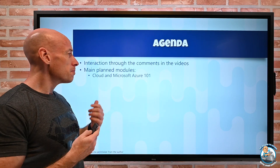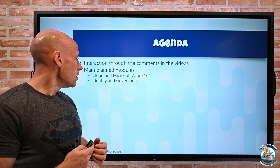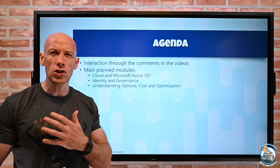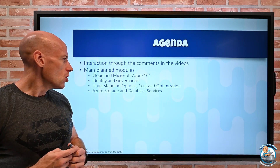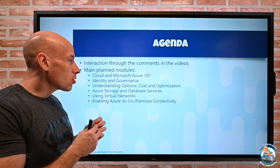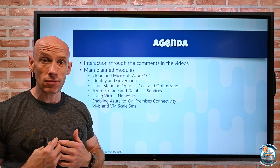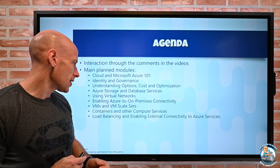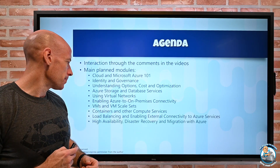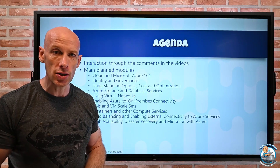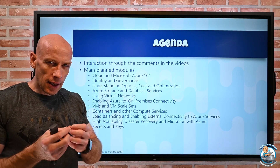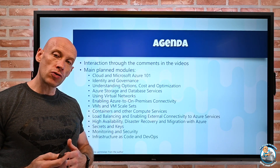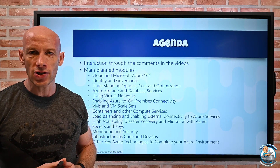This is just an intro video. The first main module will be Cloud and Azure 101. Then we'll build into identity and governance. Then we'll look at the various options, costs, and optimizations to consider as I build out my cloud. We'll look at storage and database services, virtual networks, connectivity to on-premises, and then compute services — virtual machines, virtual machine scale sets, containers, AKS, and other compute types. Load balancing, enabling external connectivity, high availability, disaster recovery, migration to Azure. Secrets and keys — how to maintain important bits of information in Azure without putting them in plain text. Monitoring, security, infrastructure as code, DevOps, and then other key Azure technologies I think are useful.